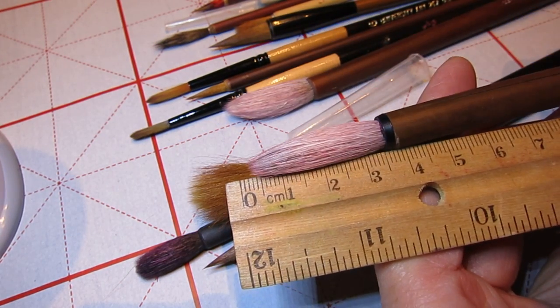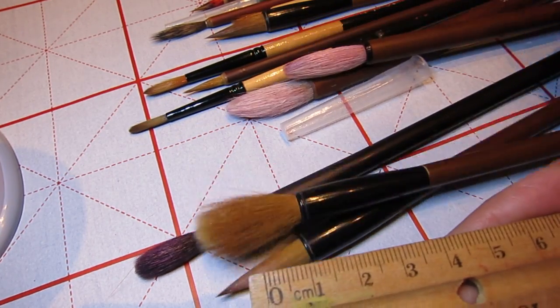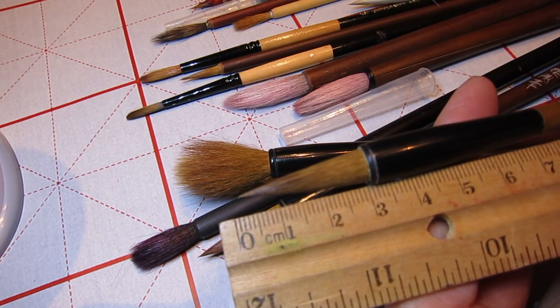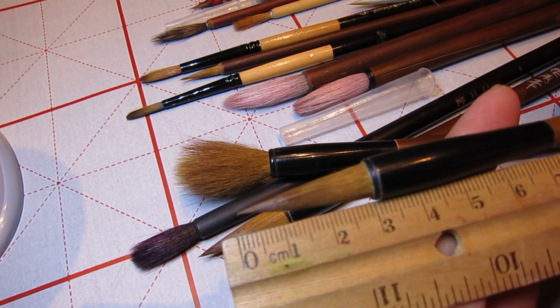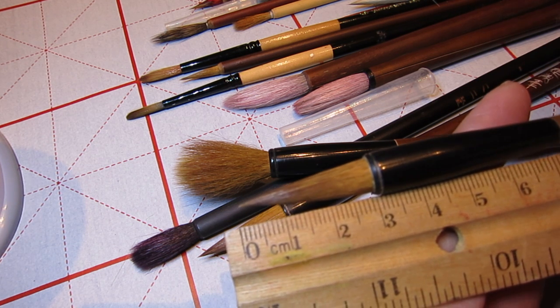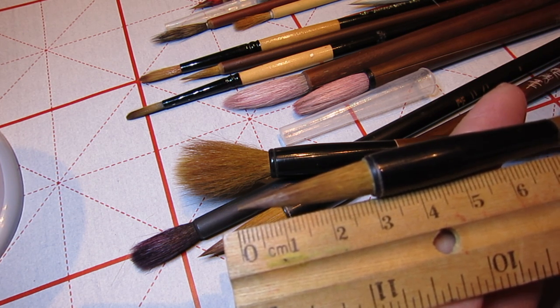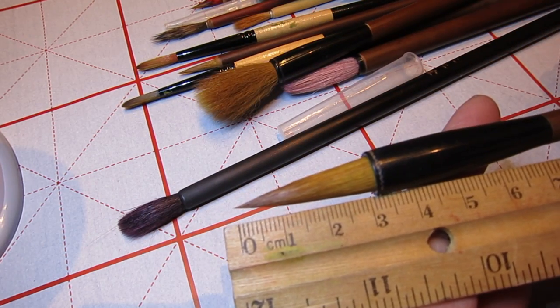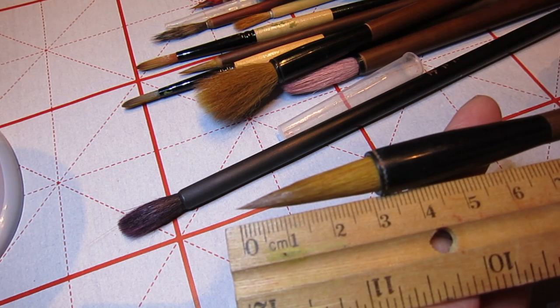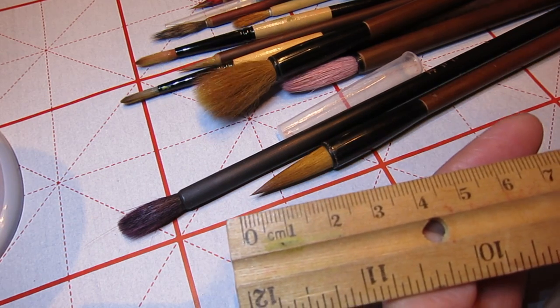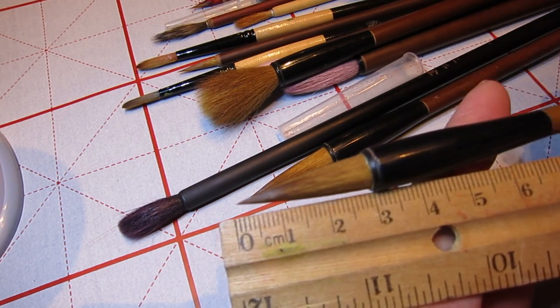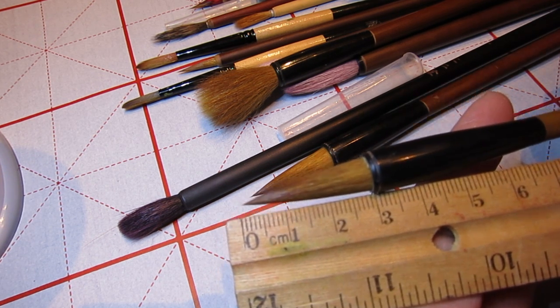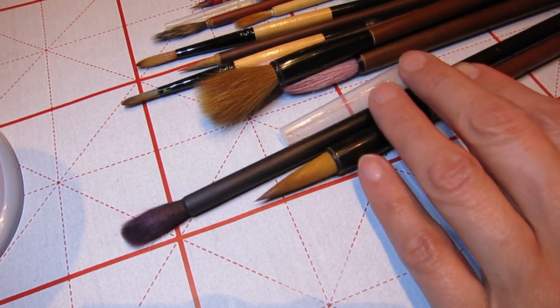And opens up like this. And a small orchid bamboo or medium orchid bamboo, whichever you like, is 20 millimeter or up to 25 or 30 millimeter.